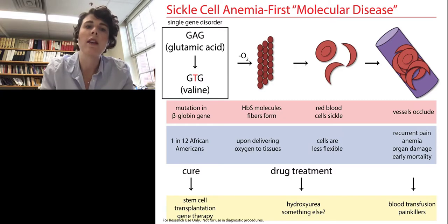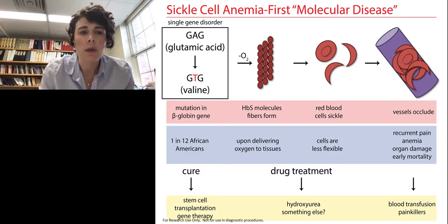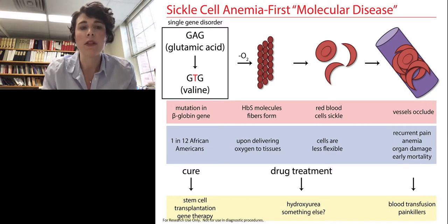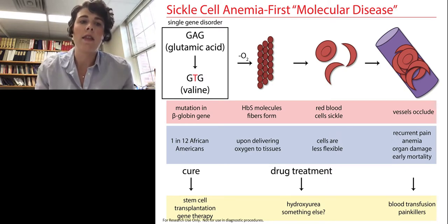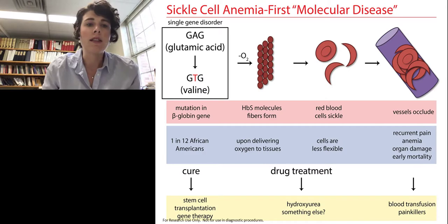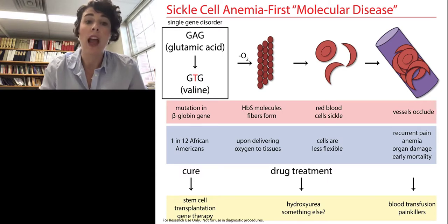Sickle cell disease, or sickle cell anemia, is known as the first molecular disease. In the 1940s, Linus Pauling discovered that it was a single-point mutation on the beta globin gene that causes the disease. In normal hemoglobin or hemoglobin A, there's a glutamic acid on the beta strands. However, in sickle hemoglobin or hemoglobin S, that glutamic acid is mutated to valine. This mutation occurs in about 1 in 12 African Americans. Sickle hemoglobin, upon oxygen delivery to the tissues, aggregates into long fibers within red blood cells.